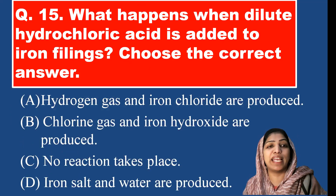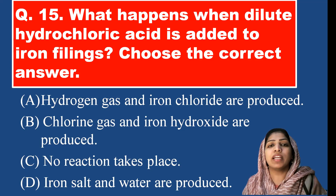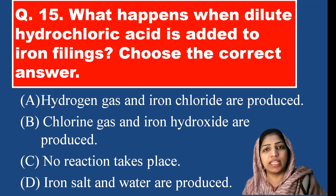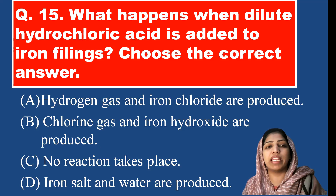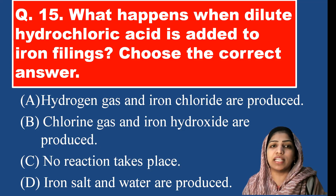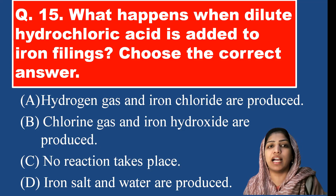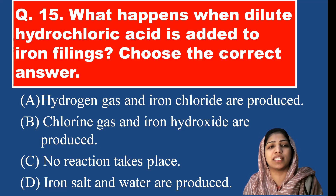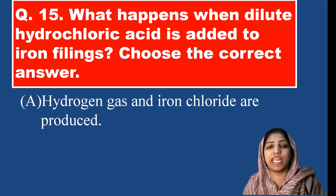What happens when dilute hydrochloric acid is added to iron filings? Iron is a metal, and when metals react with hydrochloric acid, hydrogen gas will be evolved. Iron and chloride combine to form iron chloride. So hydrogen gas and iron chloride are produced — option A is the correct answer.